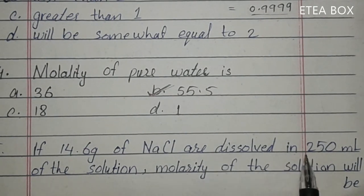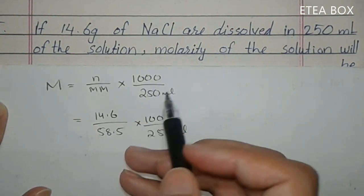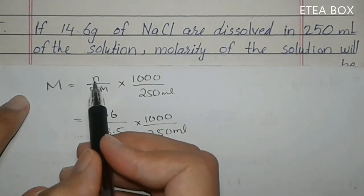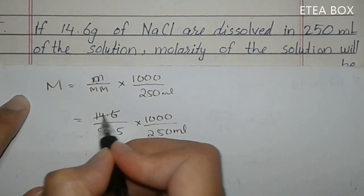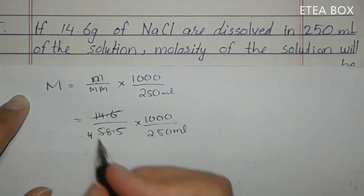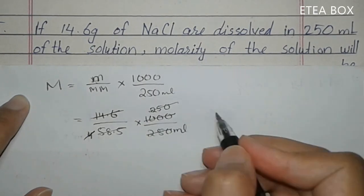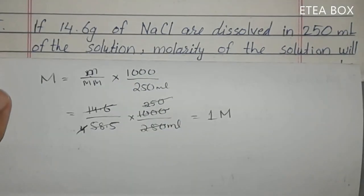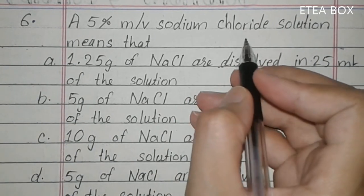Fifth MCQ: 14.6 gram of NaCl dissolved in 250 mL of solution — find the molarity. Molarity = mass in gram divided by molar mass, multiplied by 1000 divided by volume in mL. Mass = 14.6, molar mass of NaCl = 58.5, volume = 250 mL. So: 14.6 divided by 58.5 gives 1/4, multiplied by 1000 divided by 250 = 1000/250 = 4. So 1/4 × 4 = 1 molar. Option A is correct.